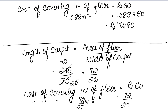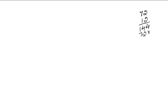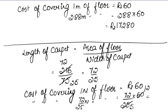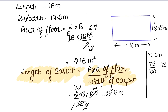Cost = 72/25 × 60. Simplifying: 60 ÷ 25 = 12/5, so 72 × 12 = 864, then 864 ÷ 5 = 172.8. So the answer is Rs. 172.8 if taken as 75 meters. If your class uses 75 meters as carpet width, the answer is Rs. 172.8. If your class uses 75 centimeters as carpet width, the answer is Rs. 17,280. Ask your teacher which method to use.